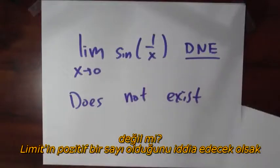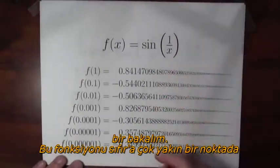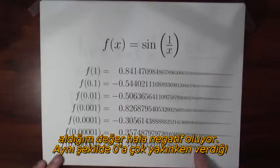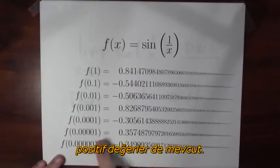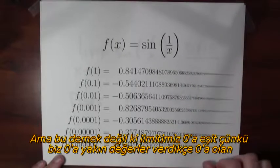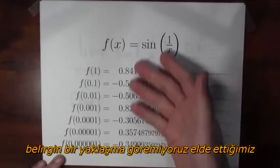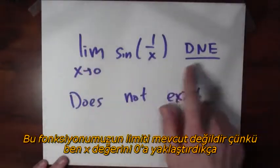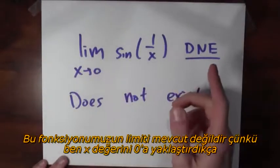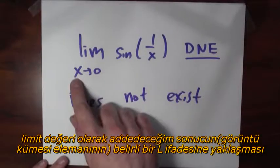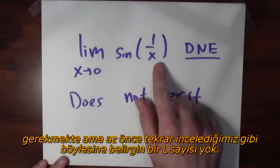If you tell me that this limit is some positive number, well look, when I evaluate the function at a number very close to zero, the output's negative. So the limit's probably not some positive number. But there's also inputs very close to zero that give positive output. So the limit's probably not a negative number either. The limit's probably not zero either because none of these numbers are getting close to zero. So in this sense, this limit just doesn't exist because it's not the case that this limit is equal to anything in particular. If you tell me this limit's equal to L, I'm going to show you numbers close to zero which aren't close to L.